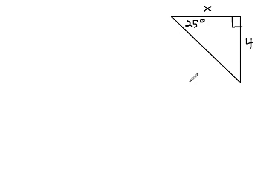To help us decide which trig ratio to use, the sine, which is opposite over hypotenuse, the cosine, which is adjacent over hypotenuse, or the tangent, which is opposite over adjacent, SOH-CAH-TOA.